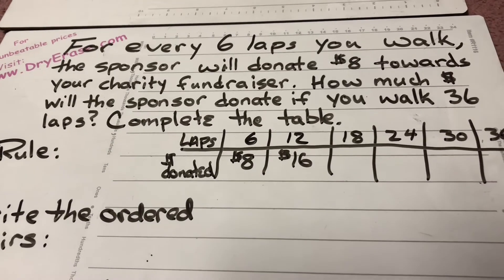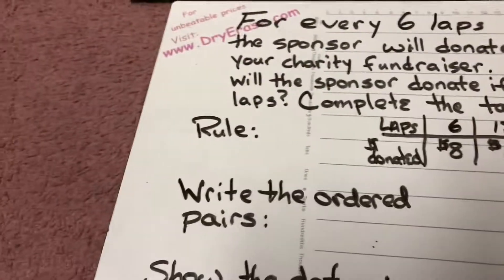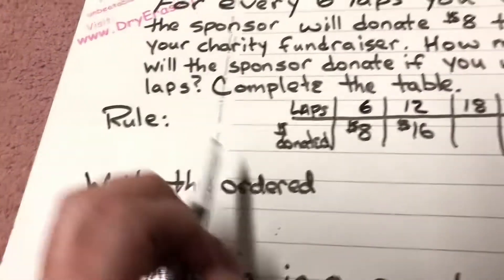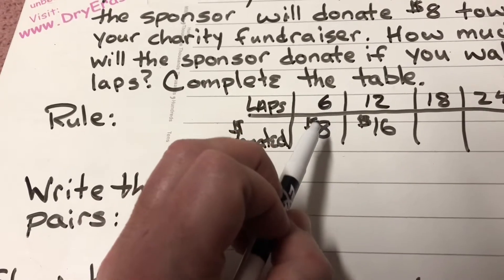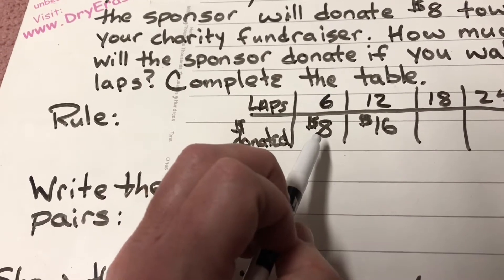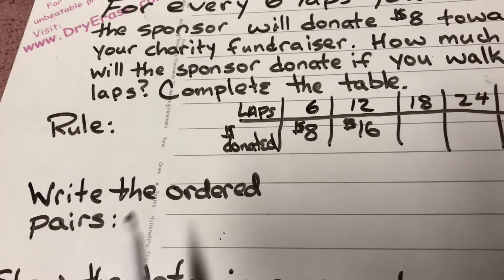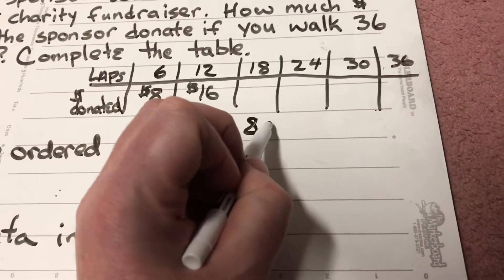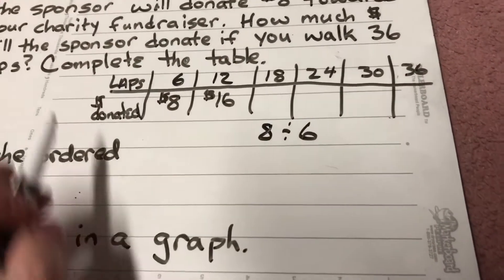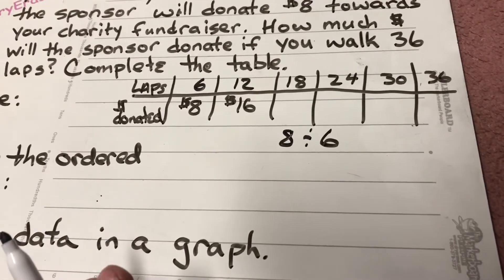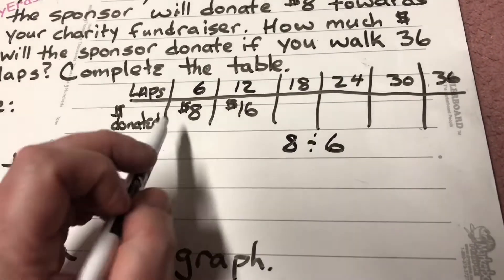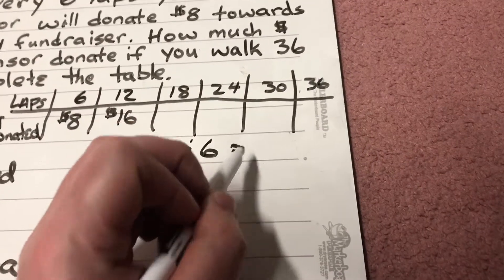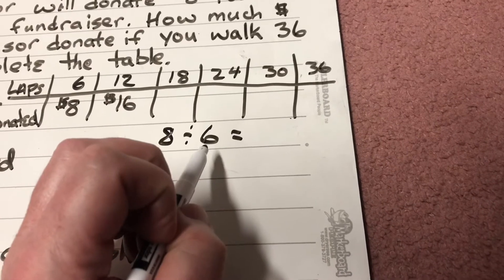The first thing we've got to establish is the rule. When we talk about establishing the rule, we think: what did we do to six to get eight? To figure that out, I'd have to do eight divided by six — just like fractions and proportions. What did I multiply six by to get eight?